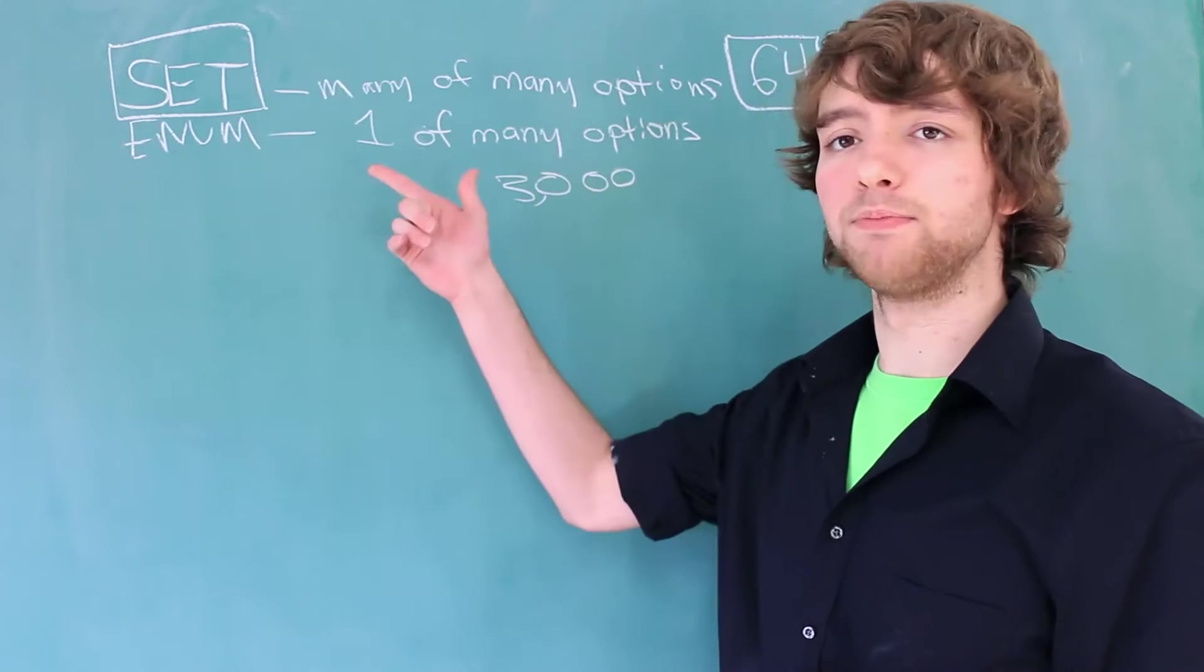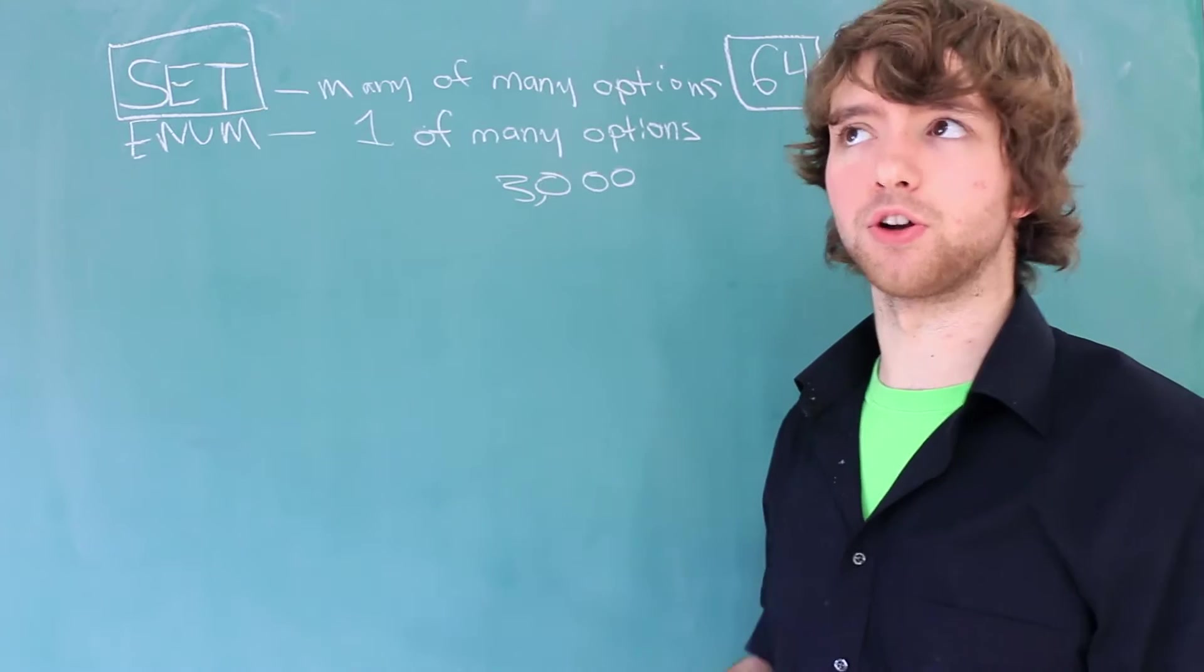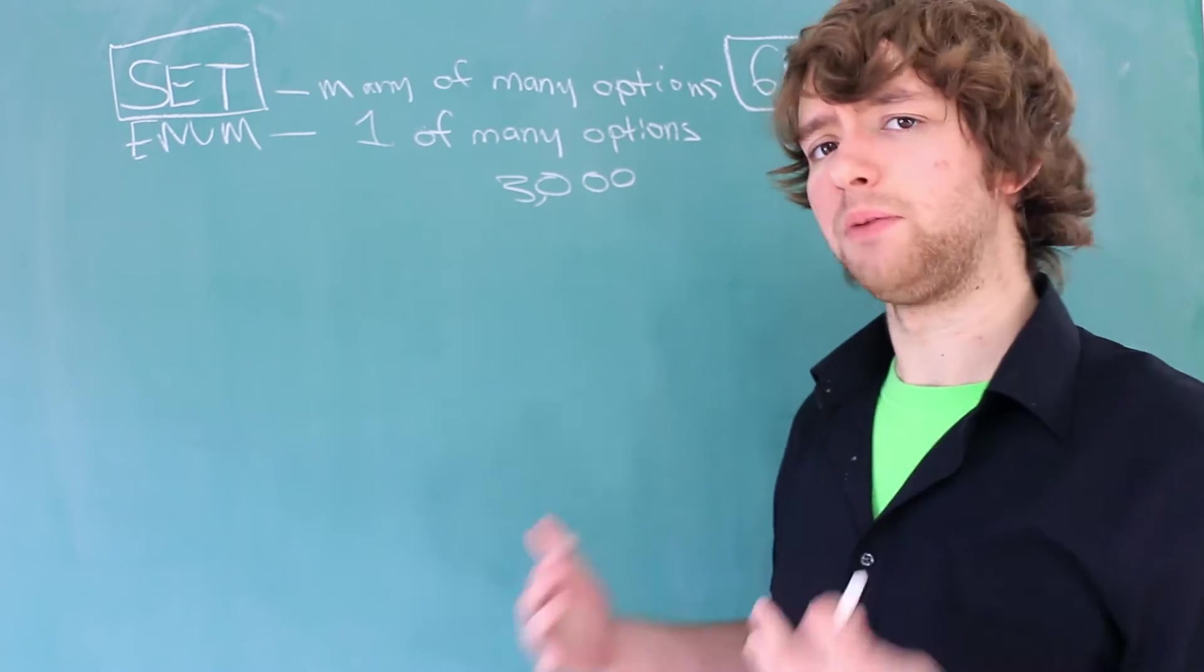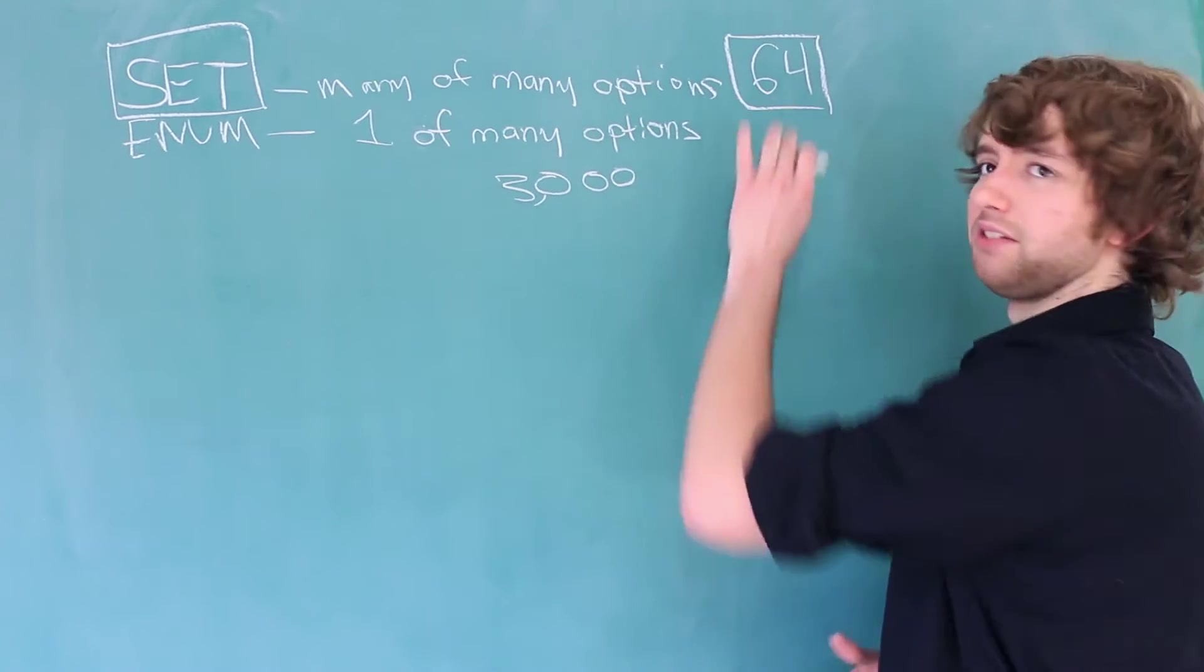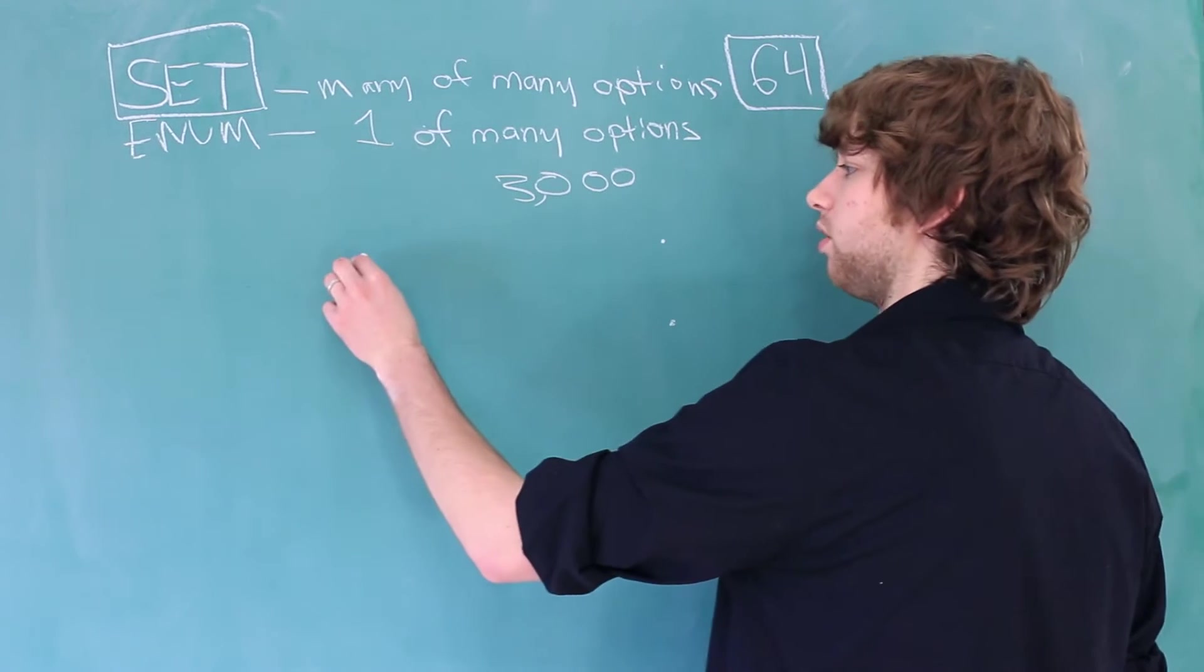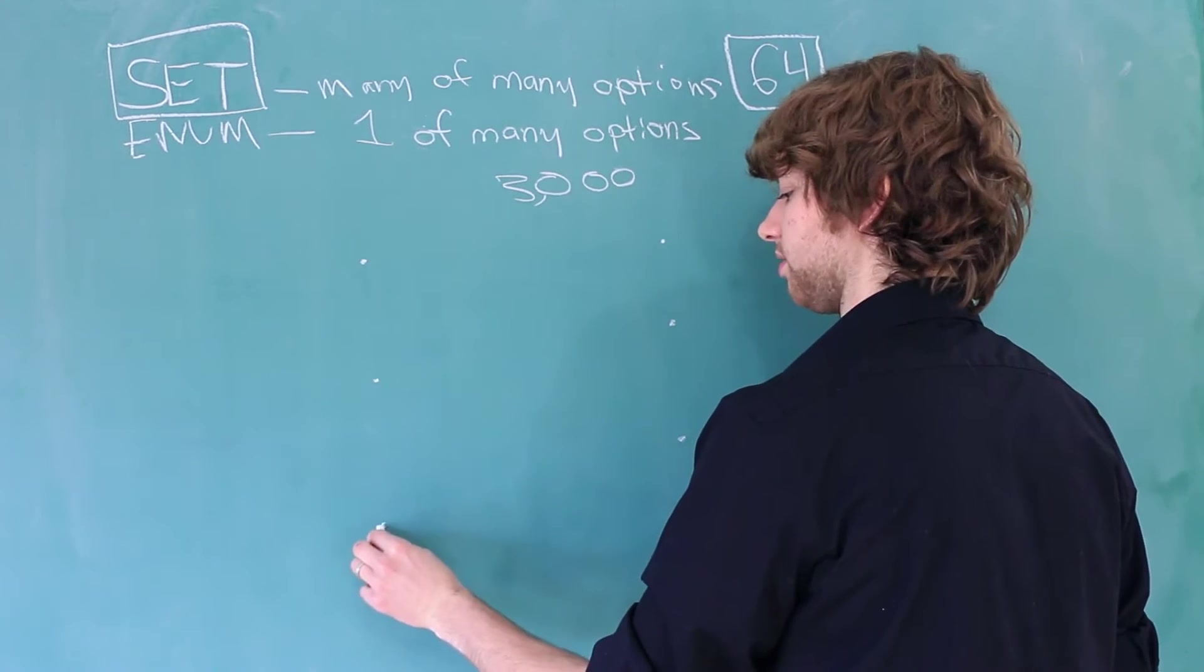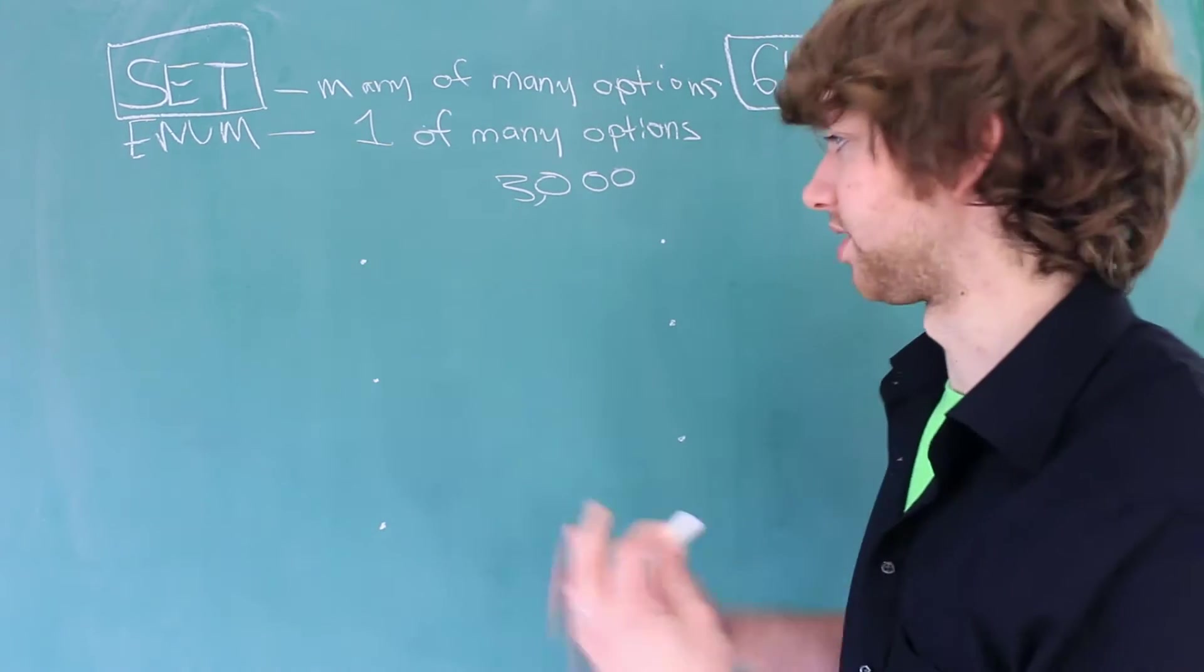As with the enum type, the importance of the set data type can be thrown into question when you start talking about database design. I mean, think about it. Let's say we make a list of options, and we'll just make a couple here. And over here, we have some rows. So let's say this is a row from a table, this is a row from a table, and this is a row from a table. And these can all be in the same table.